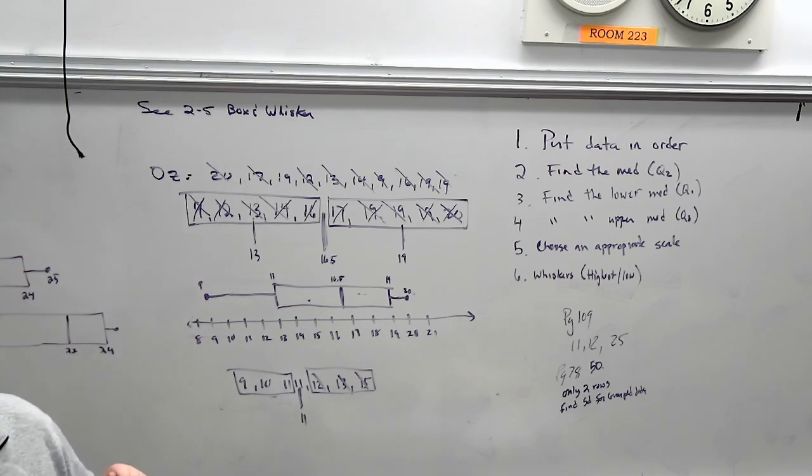Then, let's go back to 78. We did 49 on Friday. Let's do 50. Just one more time of practicing that really long table. Okay? Again, only do the first two rows. Only do the first two rows. Don't do all the data. Okay? So, on number 50 on page 78, tell me the standard deviation for grouped data. Exactly what you did on Friday.